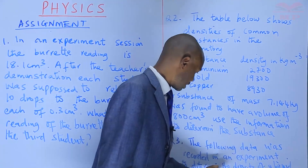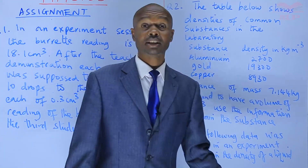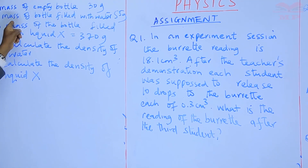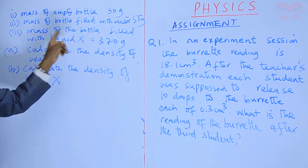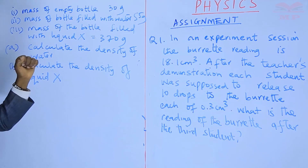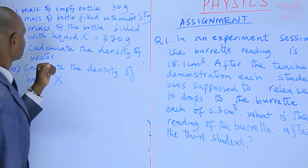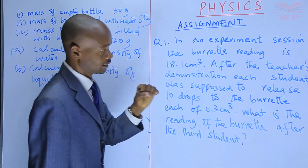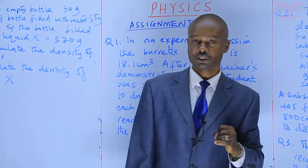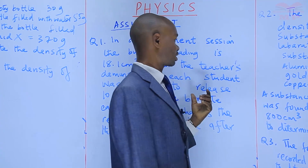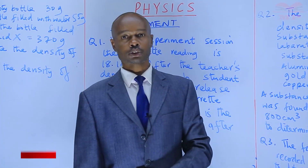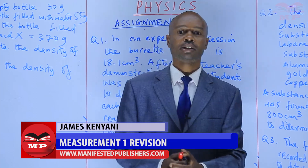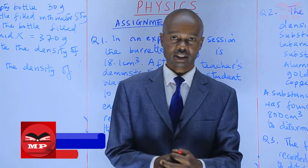Question three: The following data was recorded in an experiment to determine the density of a liquid — mass of empty bottle: 30 grams; mass of empty bottle filled with water: 55 grams; mass of bottle filled with liquid X: 370 grams. Use that information to calculate (a) the density of water and (b) the density of liquid X. Thank you for the audience, and let's meet in the next lesson where we work the solutions for those questions. Have a nice time, enjoy the assignment, and bye.